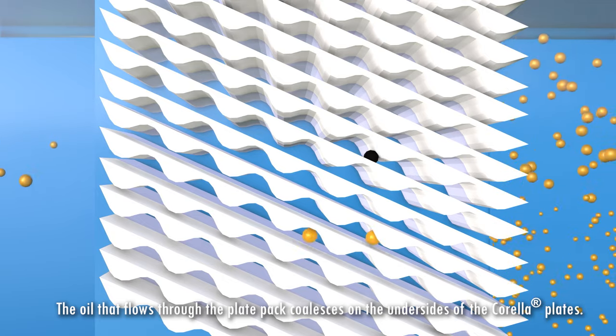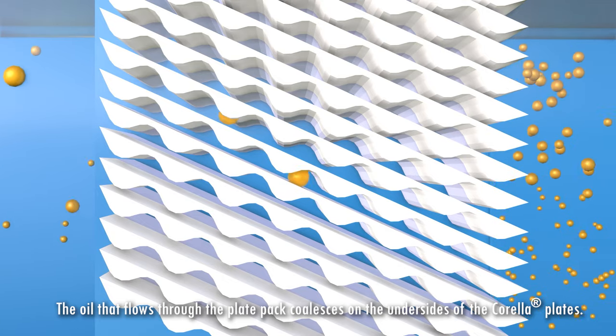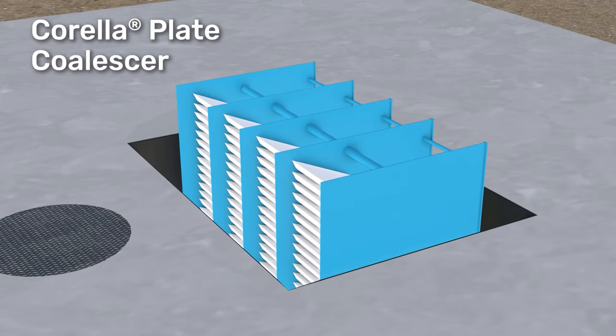Oil is moving through the corrugated plates and the corrugations are trapping the oil, forcing them to coalesce and form larger particles of oil. So they're being directed upwards to the top of the water.